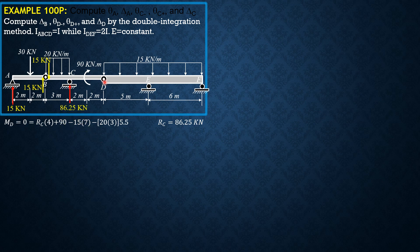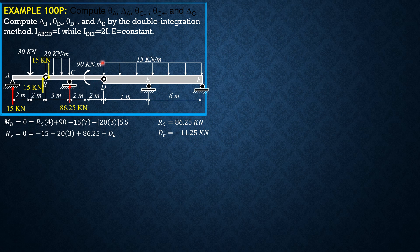For the reaction at D, sum forces in the Y direction for portion BCD equals zero: negative 15 minus 20 times 3 plus 86.25 plus D equals zero. D is equal to negative 11.25 kilonewtons. Since it is negative, it should be downward on the left side of D and upward on the right side of D.